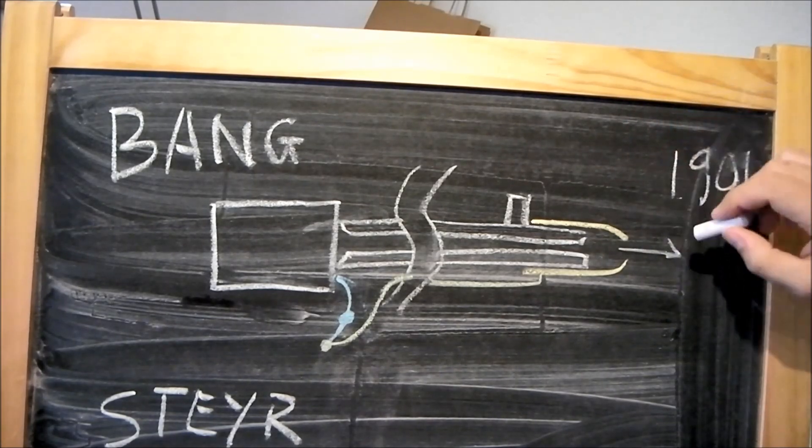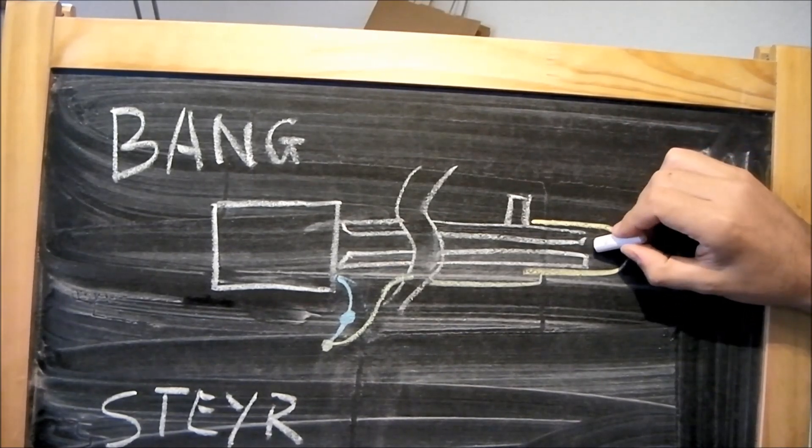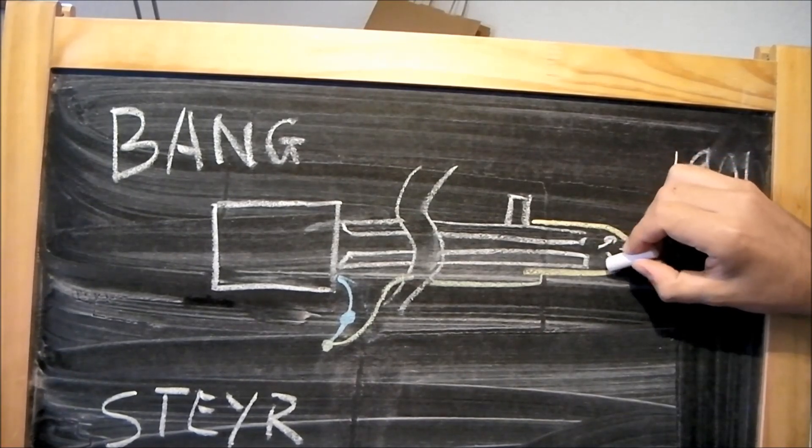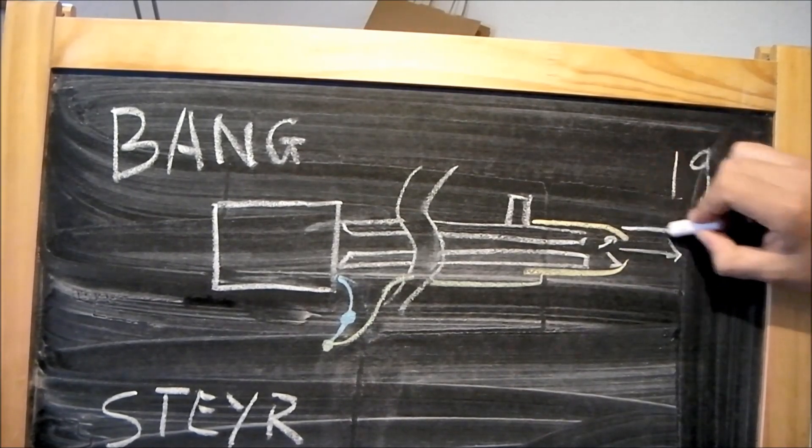So what happens is the bullet leaves, the muzzle gas pushes against the front of the sleeve, brings it forward.